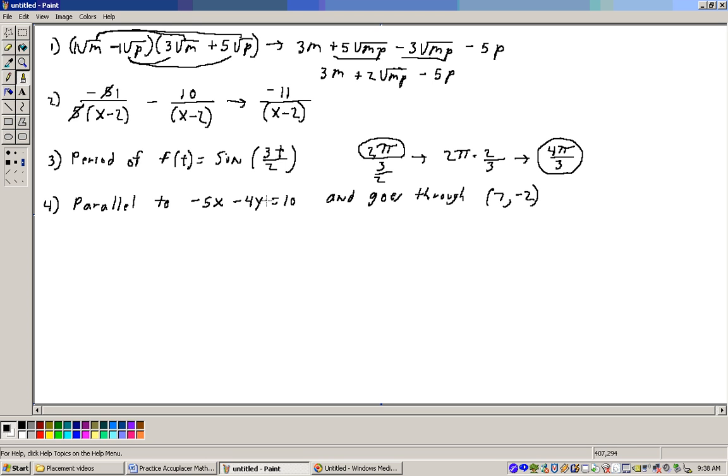To get the slope of this, we need to solve it for y so we can get the form y equals mx plus b. So to solve this for y, I'm going to add 4y to both sides, get a positive 4y over here, and subtract 10 from both sides. Get minus 5x minus 10 equals 4y. Then divide through both sides by 4, and I would get y equals, y equals, here, minus 5 fourths x, and that would be minus 10 fourths. But here's the important thing, is that the slope is minus 5 fourths.